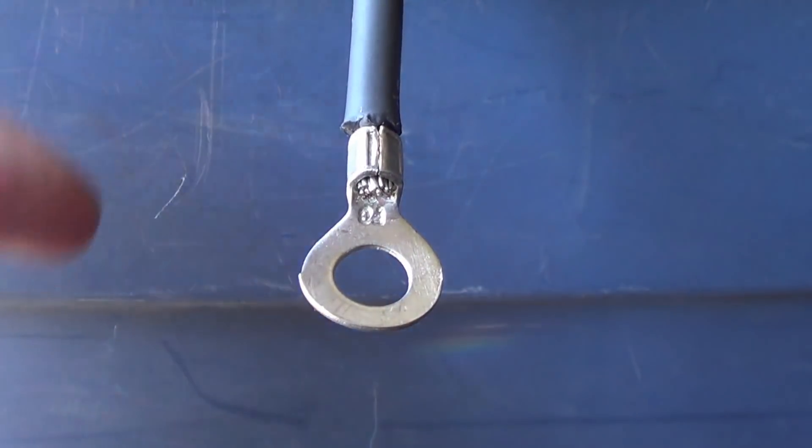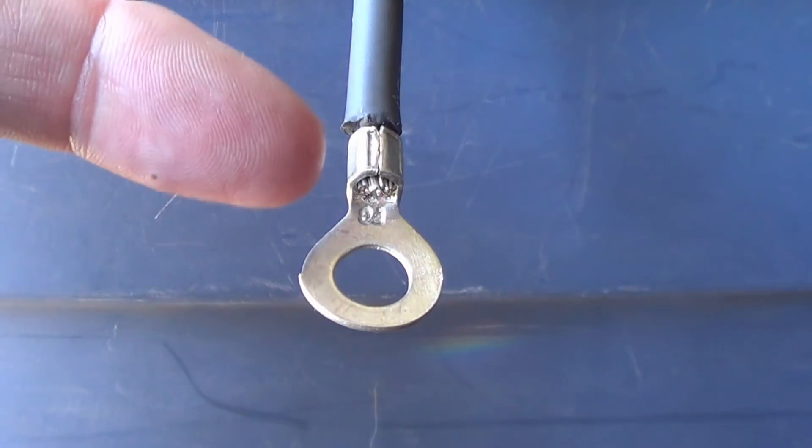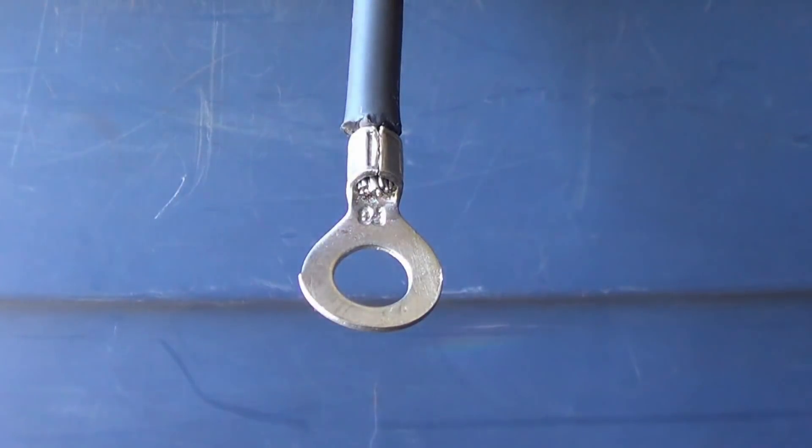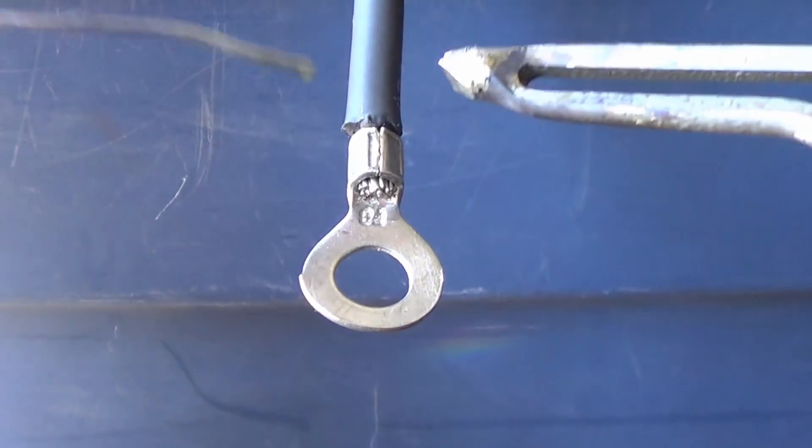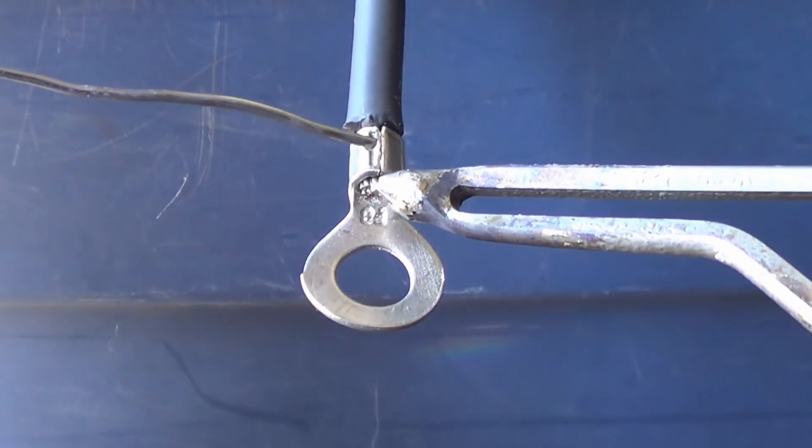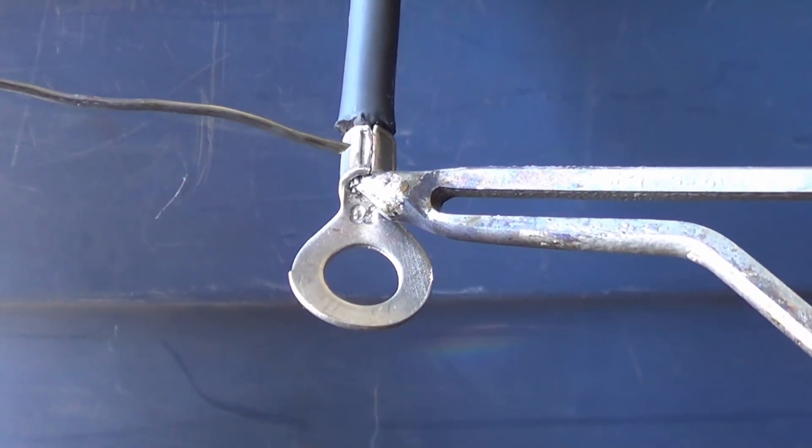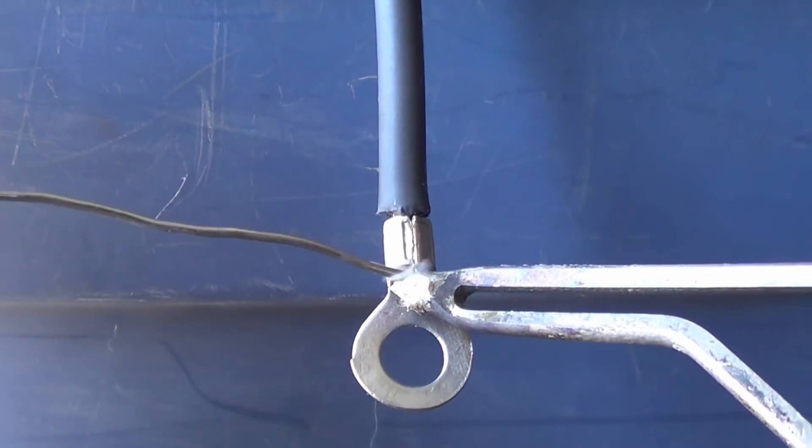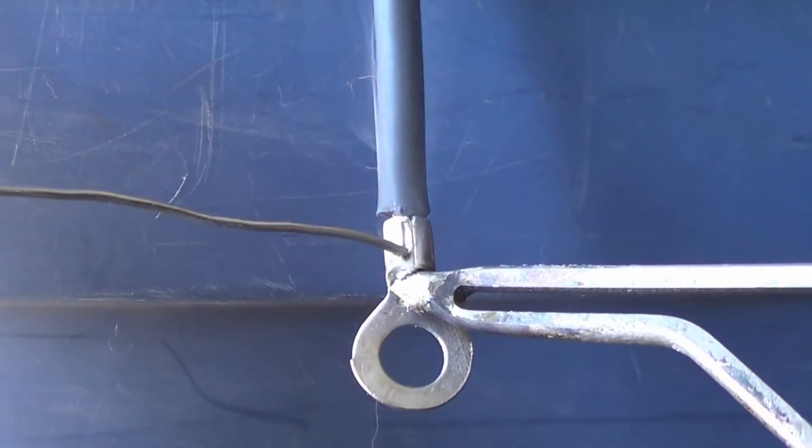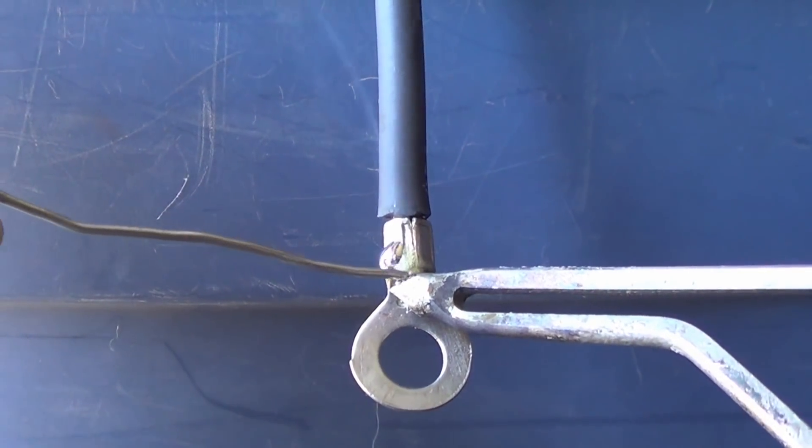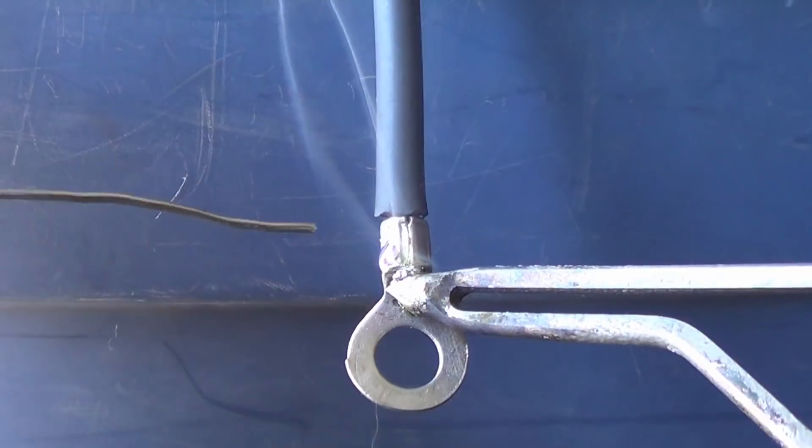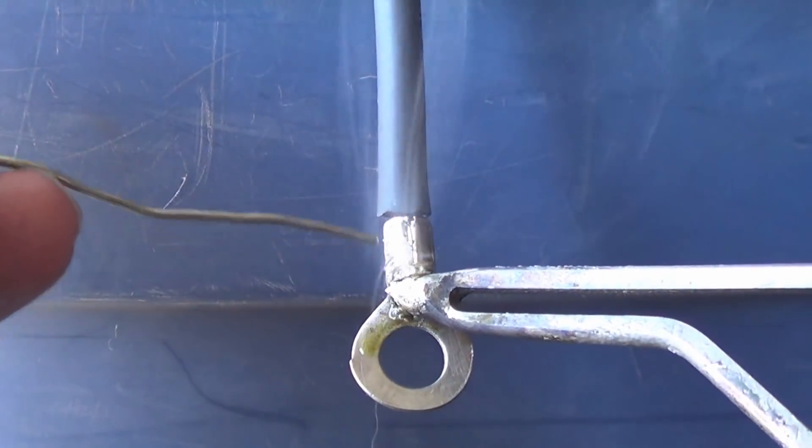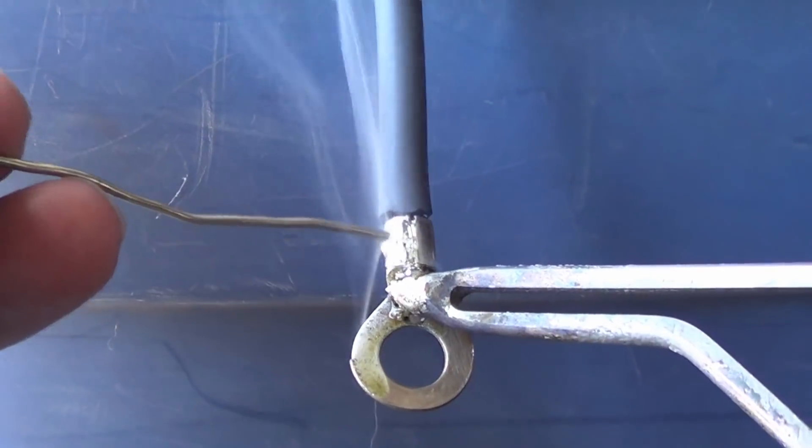Another thing I like to do, even when I've done a crimp connection on something like this ring connector, I've used a crimper to crimp the wire in, but a lot of times I like to just double up and add some solder to it. Just add a bit, let it run right up into the joint.